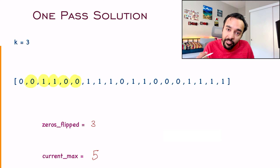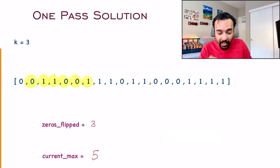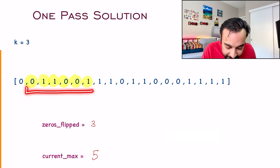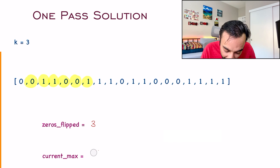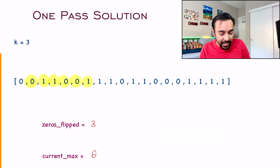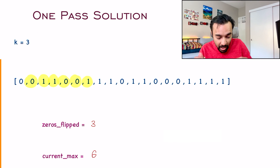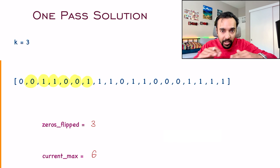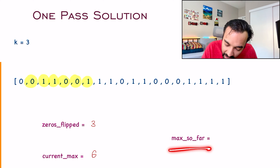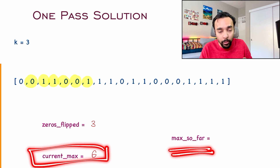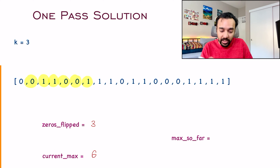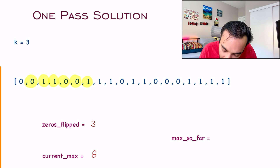Moving ahead, you see a 1 again — you did not have to flip a zero. The window size is now 6, so you can update the maximum value. Essentially: traverse the array, if it is a 1 well and good, if it is a zero check whether you can flip it based on k. Keep traversing, keeping track of the maximum value found so far. The maximum was 5 earlier, now it is 6, so you keep updating this value.